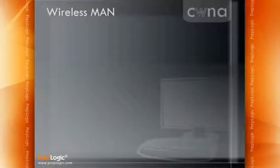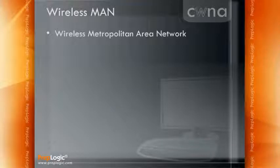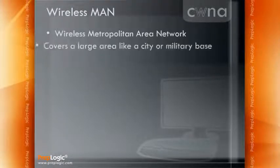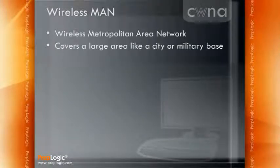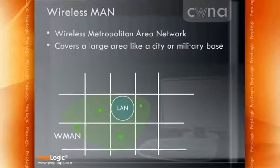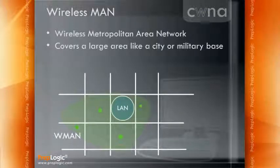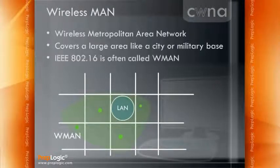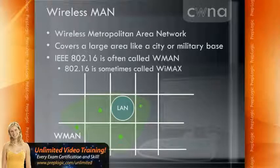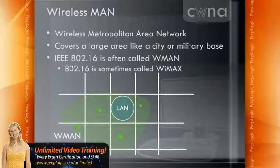We also have a wireless network known as a wireless metropolitan area network, or wireless MAN. A wireless MAN differs from a wireless LAN in that it covers a large area like a city or maybe a military base — much larger than what you would expect to cover with wireless LAN technologies. We need radio frequency communications that can travel for portions of a mile or possibly even multiple miles. That's where the IEEE 802.16 standard comes in, often called WiMAX. 802.16 gives us this ability to cover very large areas.